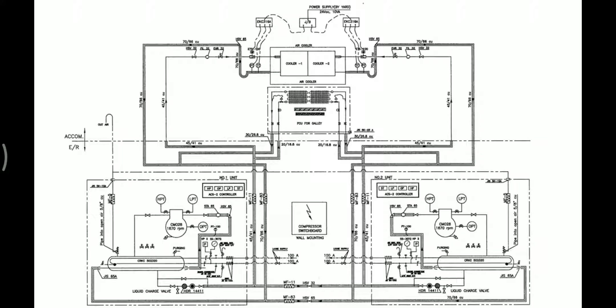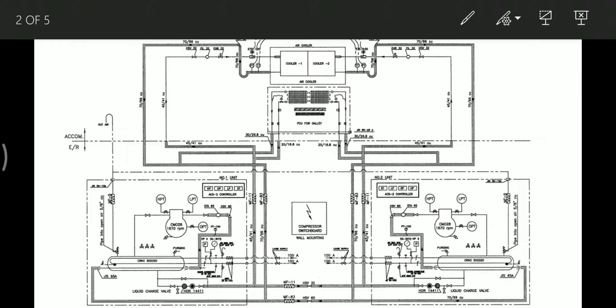This is the AC plant line diagram onboard ship. Previously we have already seen the line diagram for the refrigeration plant, and this is the plant for the air conditioning system. So this is the suction line — it passes through the bottom part of the condenser and then enters the compressor suction.